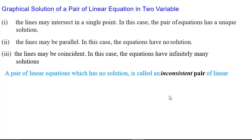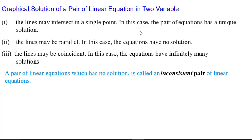A pair of linear equations which has no solution is called an inconsistent pair of linear equations. Inconsistent means there is no solution. Out of these three cases, only the second case — when the lines are parallel — gives no solution, so only this condition is inconsistent. The other two conditions are consistent.